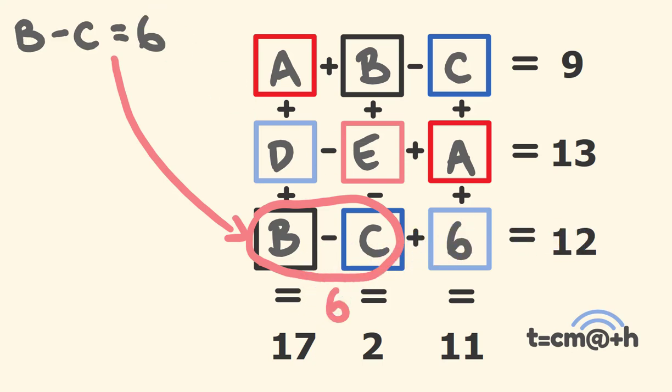We can also substitute in the 6 value on the D over here. So let's do that. You also may notice there is another B subtract C just here. So we can also substitute that in as well. We know that this is 6, so A plus 6 is equal to 9.